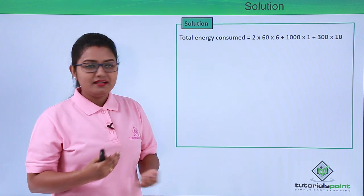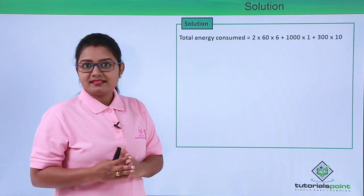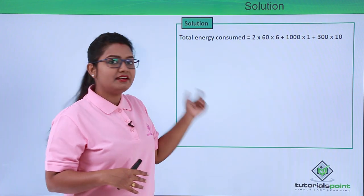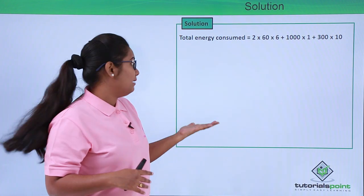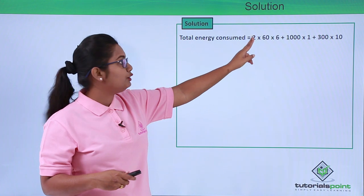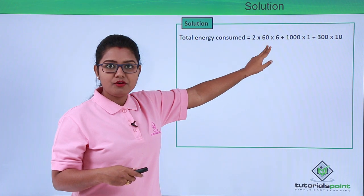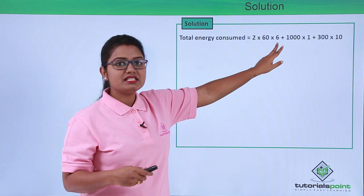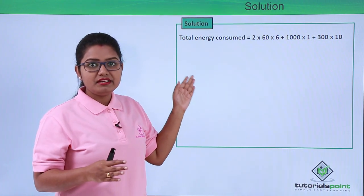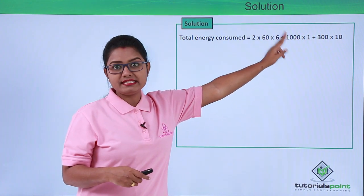The total energy consumed equals the energy consumed by the two electric bulbs, plus the energy consumed by the electric iron, plus the energy consumed by the refrigerator. Since there are two electric bulbs, we multiply the energy of one bulb by two: that is 2 × 60 watts × 6 hours.